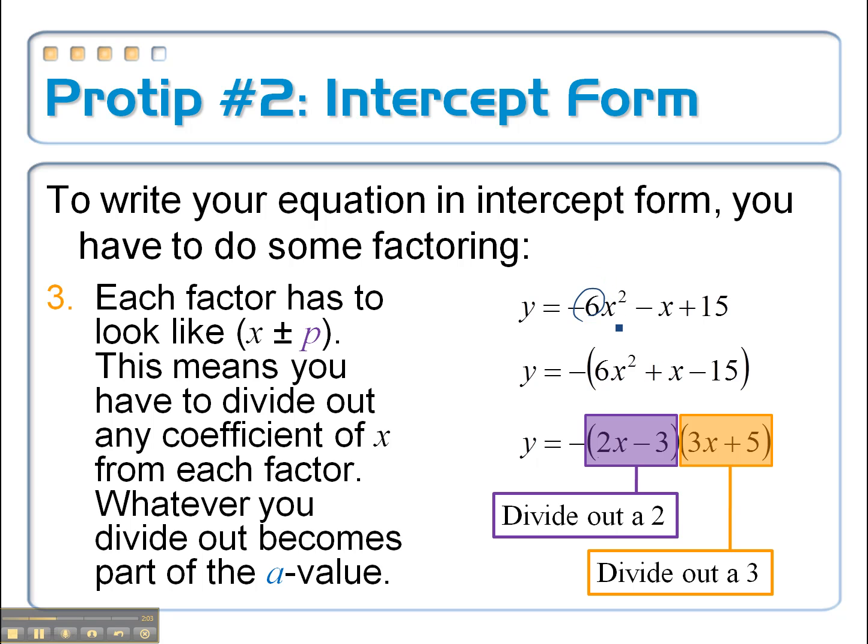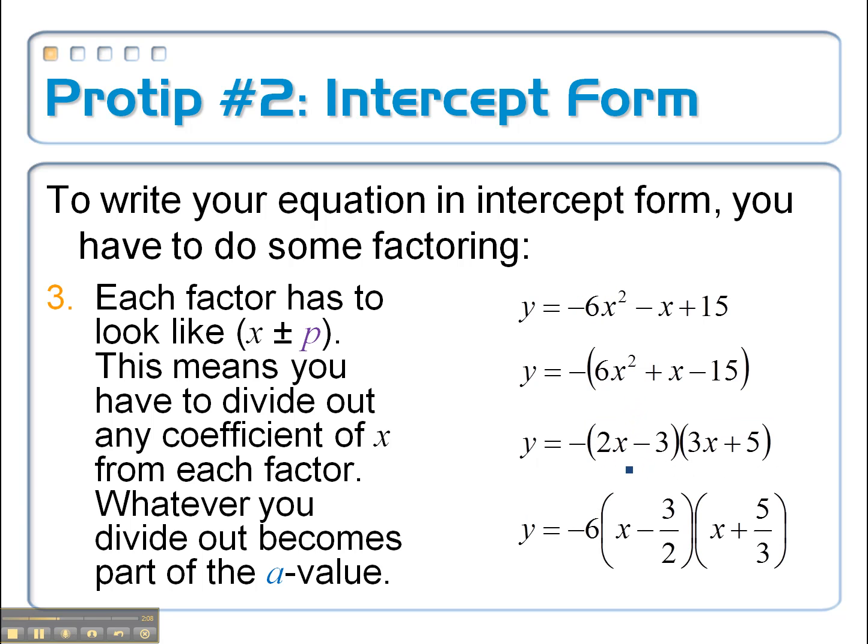Okay, so when I divide out the 2, I have to divide both of these things by 2. Divide that by 2, I get the x. I divide this one by 2 and I get three halves. Same thing over here, but I'm going to divide these by 3, and that's where the five thirds comes from. So in this form, I know that my x intercepts are equal to three halves and negative five thirds.